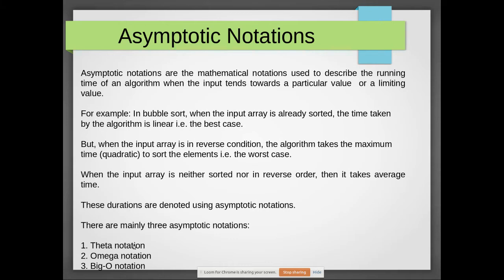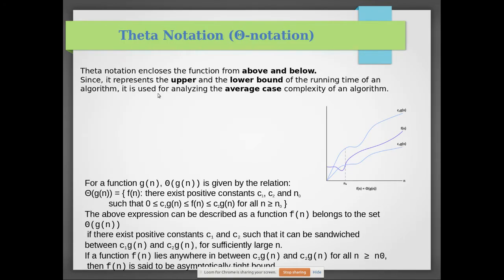There are three types of asymptotic notation broadly: theta notation, omega notation, and big O notation. For theta notation, imagine a function execution — there will be a lower bound and an upper bound of the execution time. In theta notation, the function will execute between the lower bound and upper bound, so this is said to be the average case.